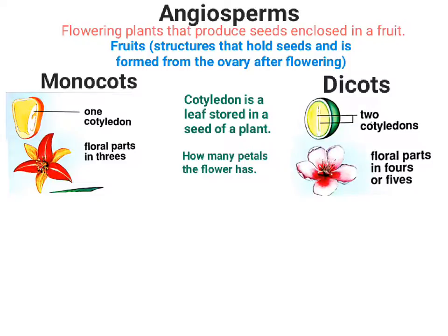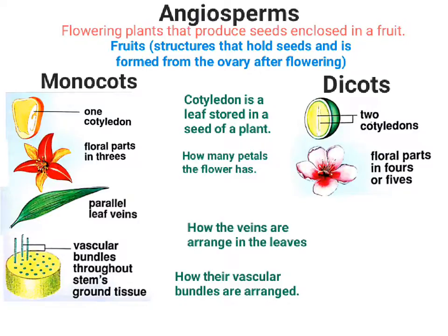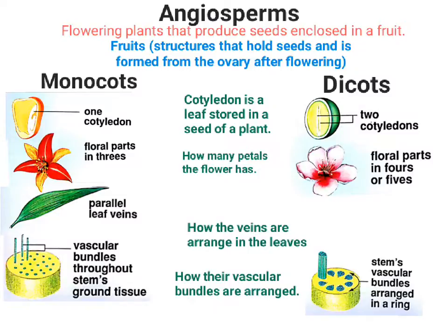Looking back at monocots, they have bundles of vascular tissue that are scattered throughout the stem and show up as parallel veins in the leaves. Dicots, the bundles are in a ring or circle and show up as branching net-like veins in their leaves.